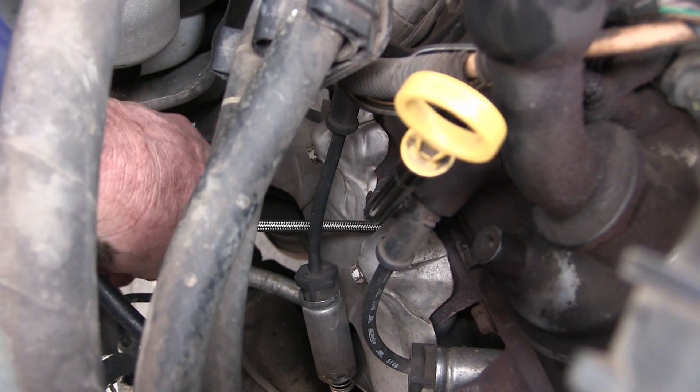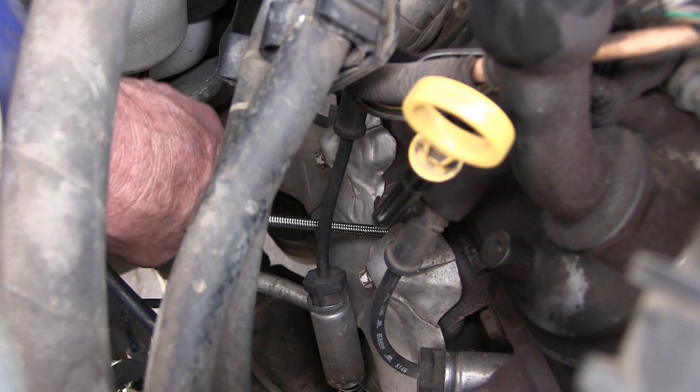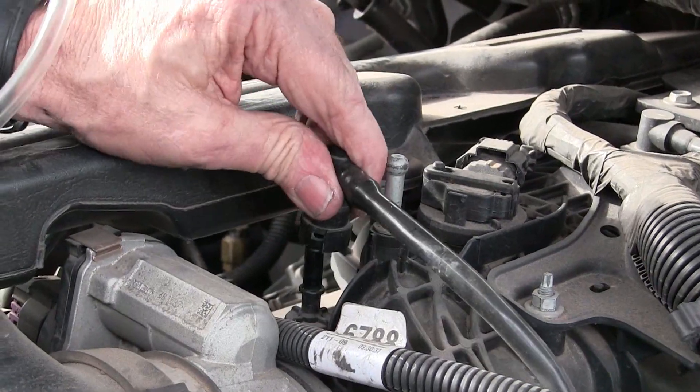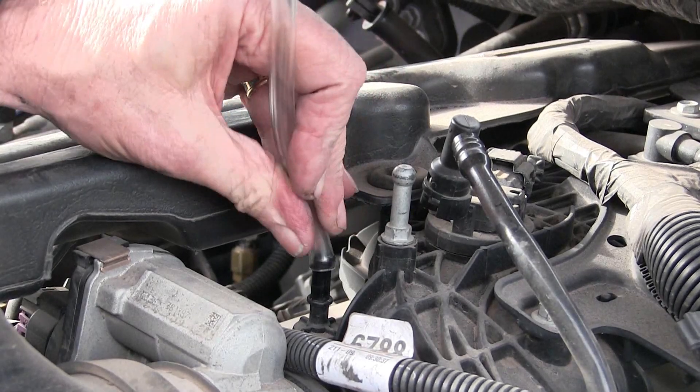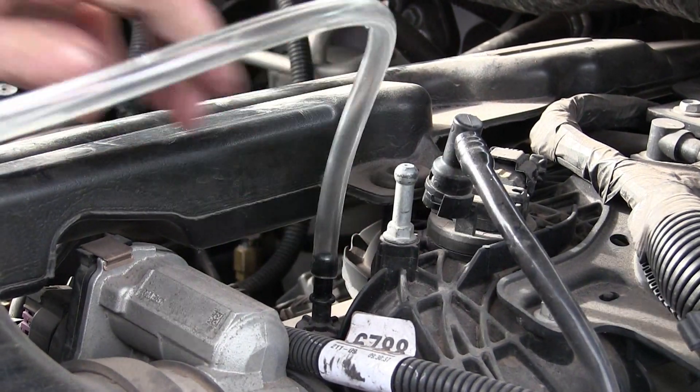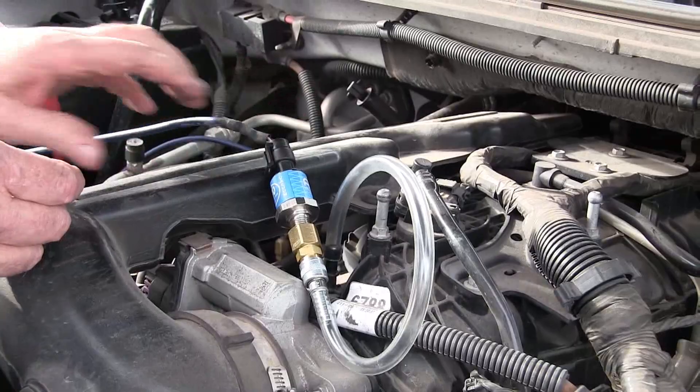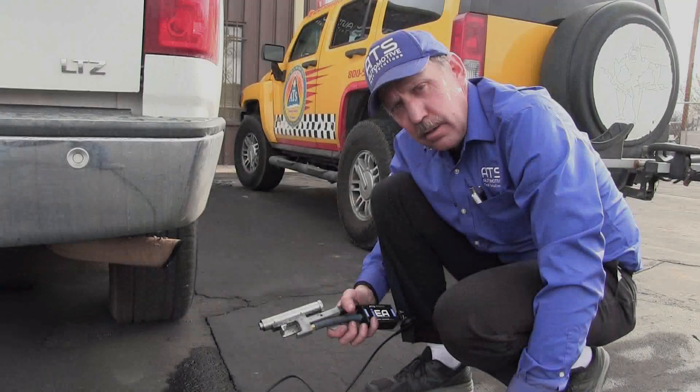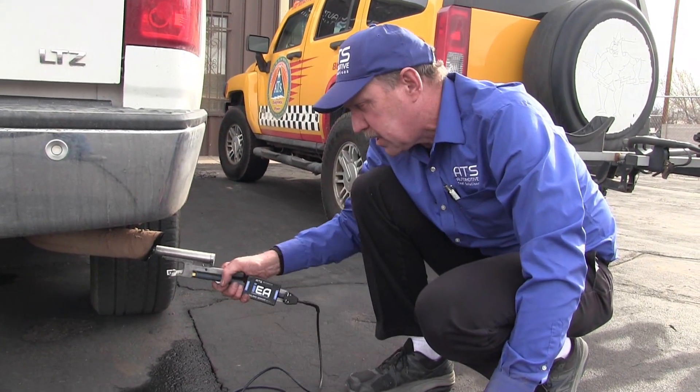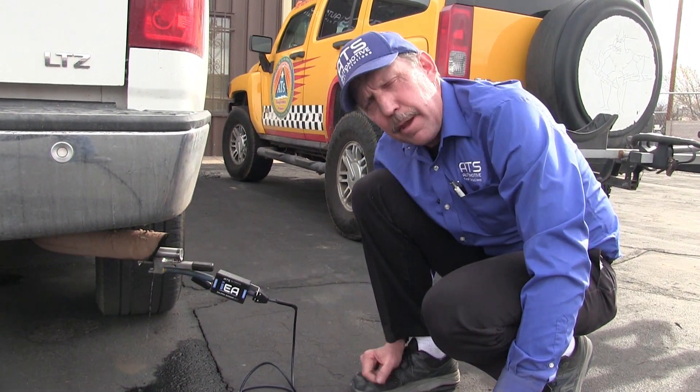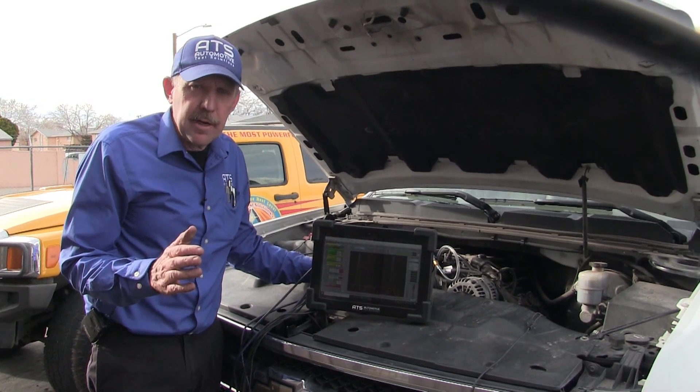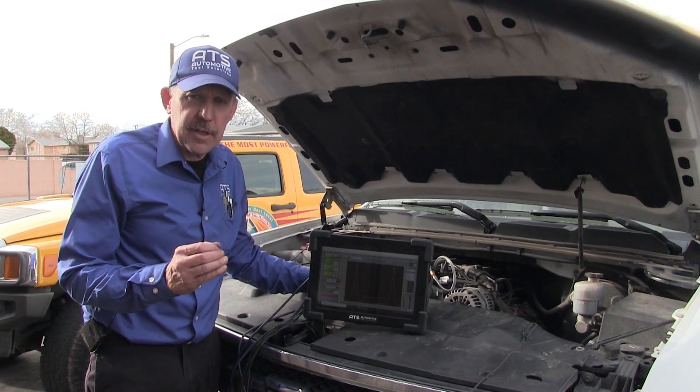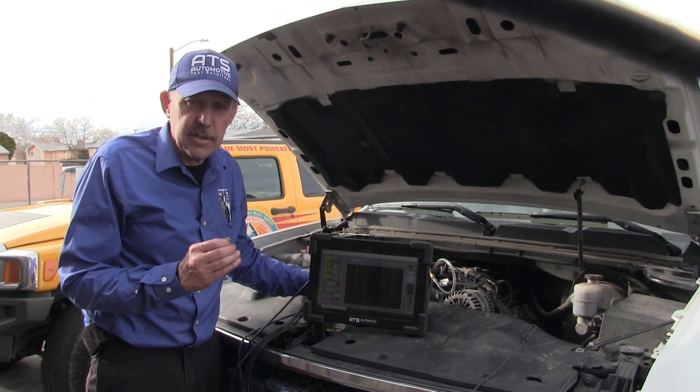We're going to put the compression testing hose into cylinder four. We're going to put a sensor into the intake manifold as well. This will give me my intake pulls. Now we're going to put the exhaust probe into the tailpipe. This will give me my exhaust pushes. Now we have our pressure transducers in the cylinder intake and in the exhaust.